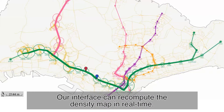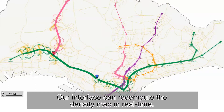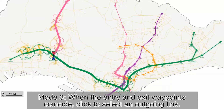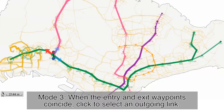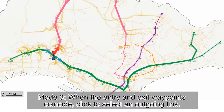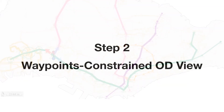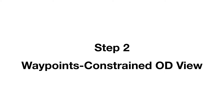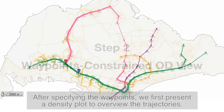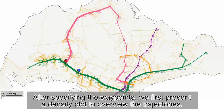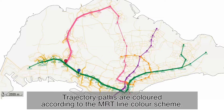Mode 2: Our interface can recompute the density map in real time. Mode 3: When the entry and exit waypoints coincide, click to select an outgoing link. After specifying the waypoints, we first present a density plot to overview the trajectories. Trajectory paths are colored according to the MRT line color scheme.